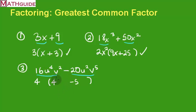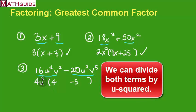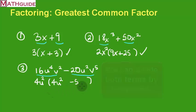Now for the letters — I've got u to the fourth and u squared. The most I could take out is u squared from each part. Then u squared times u squared is u to the fourth, and for the second term I don't need any more u's to get u squared. I'm good with the u's.